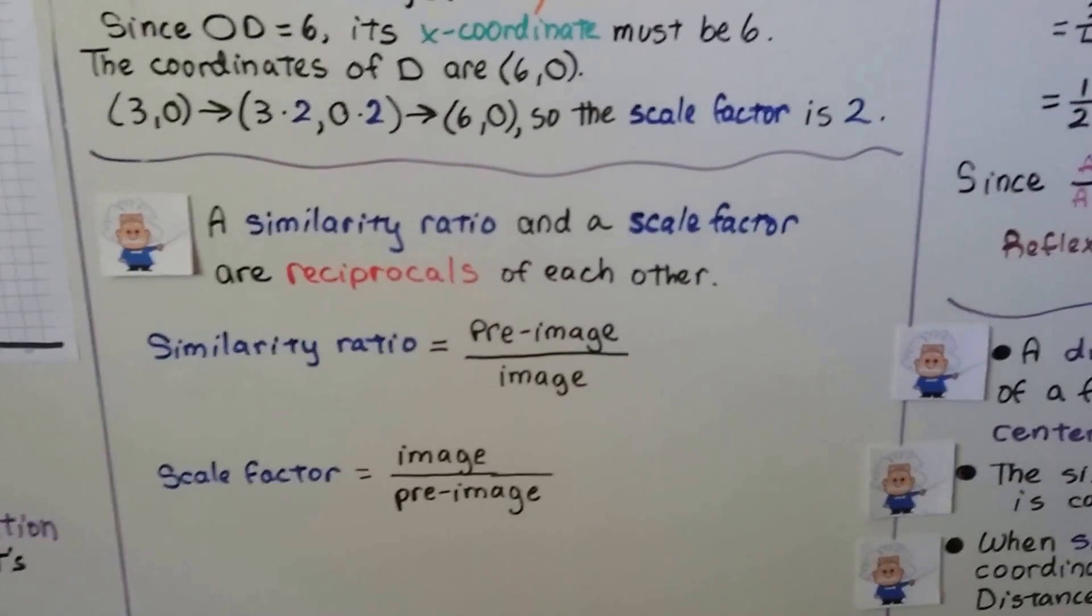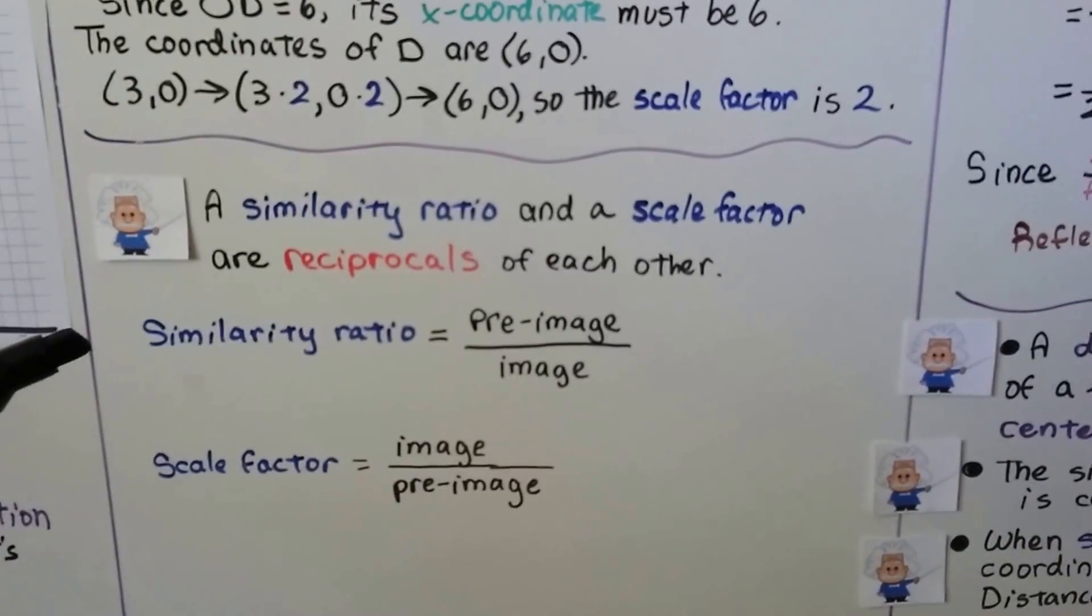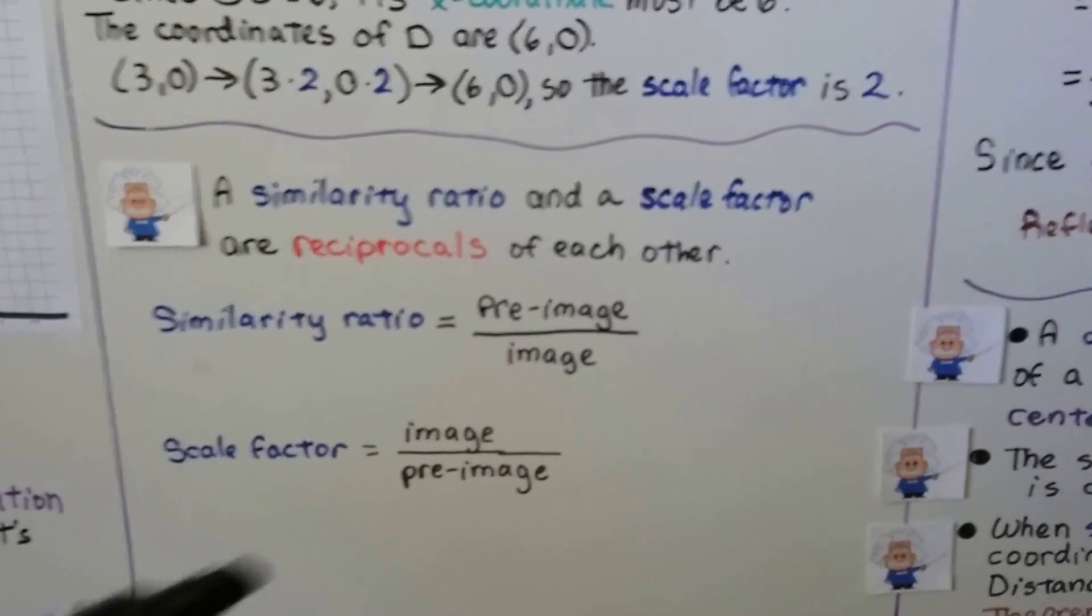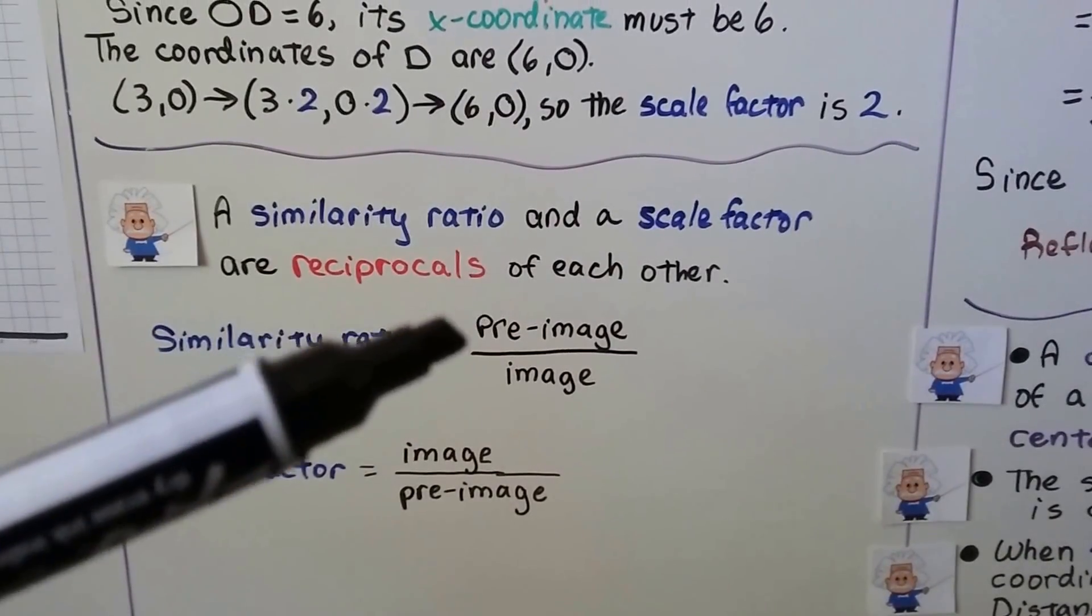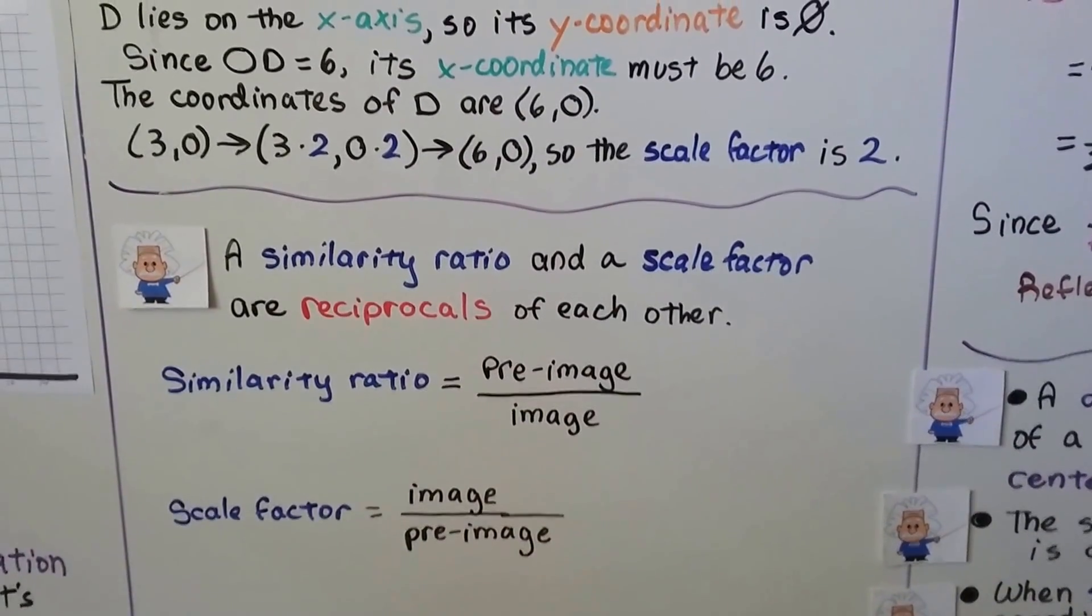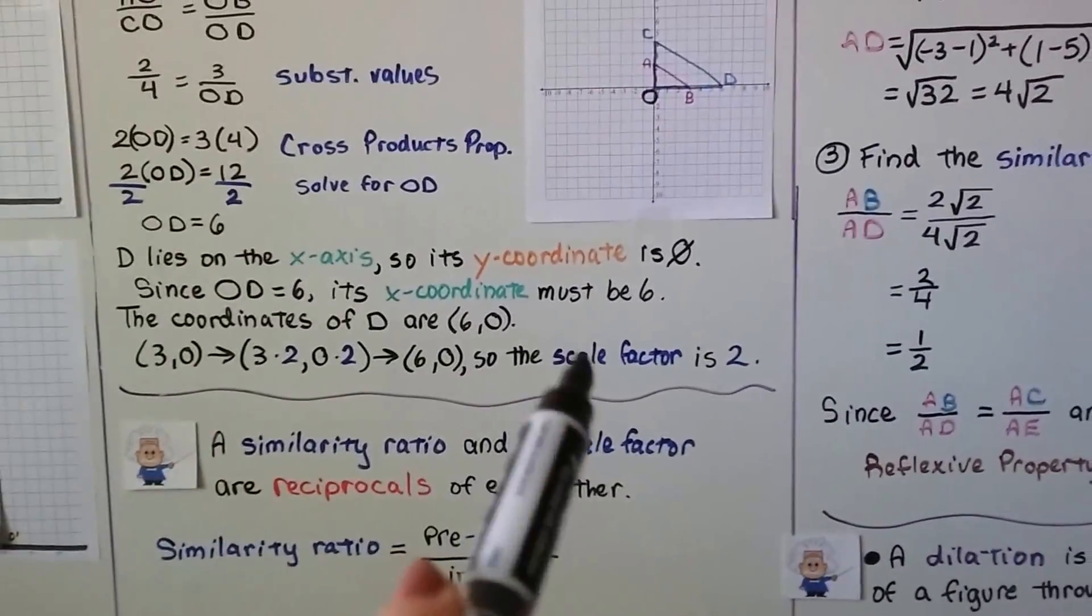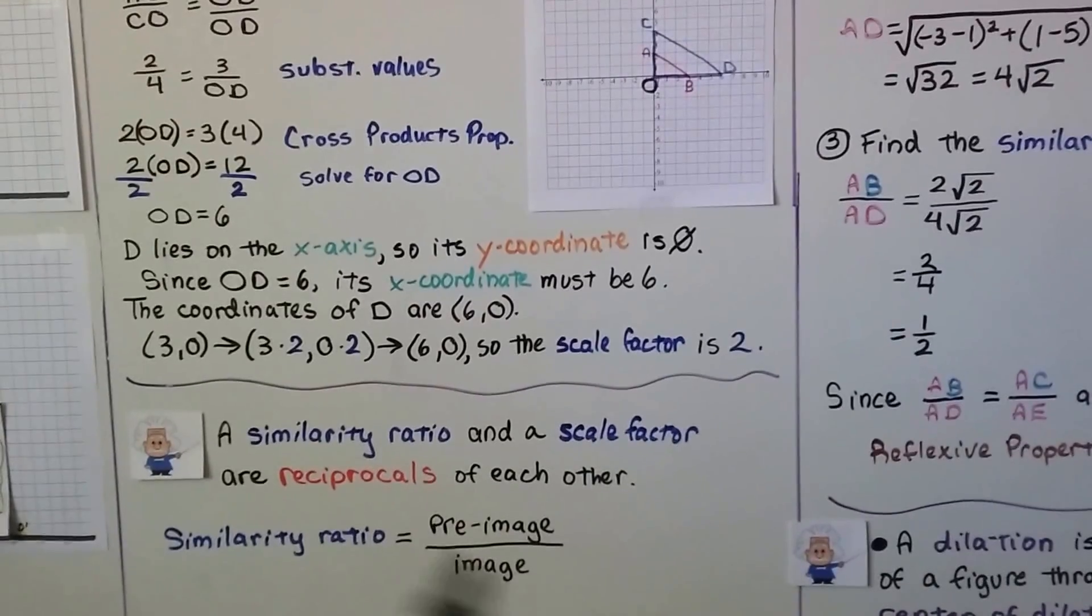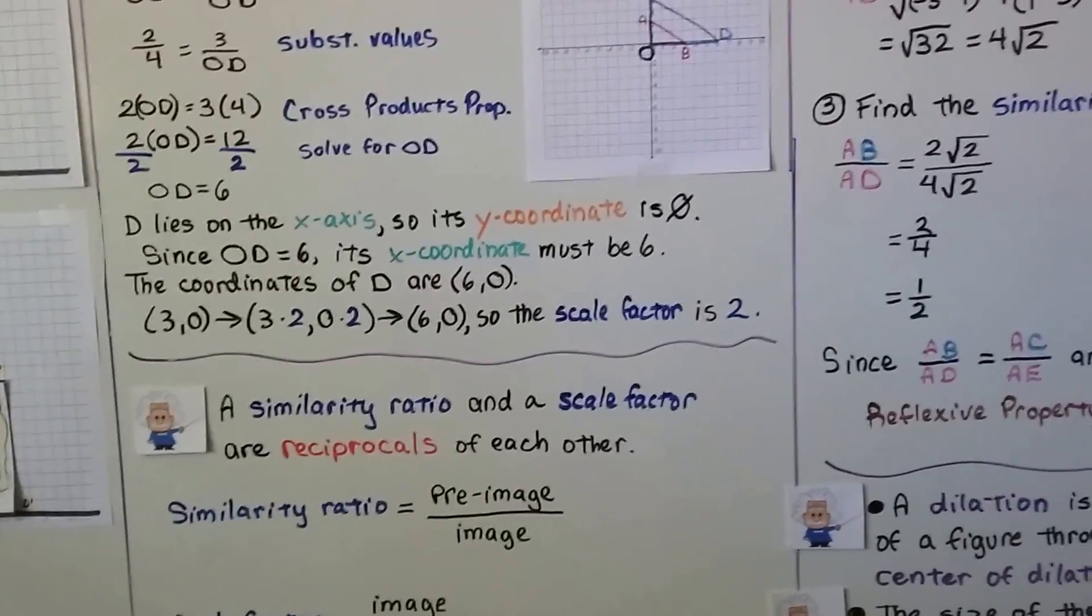A similarity ratio and a scale factor are reciprocals of each other. A similarity ratio would be the pre-image over the image. The scale factor would be the image over the pre-image. In this case, if the scale factor is 2, we could write that as 2/1. That means the similarity ratio is one-half.